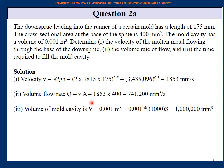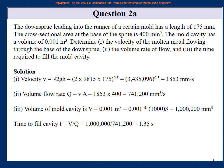The volume flow rate Q equals velocity times cross-sectional area (m/s × m² = m³/s). But the basic definition of volume flow rate is volume per unit time: Q = V/t. Therefore, time equals volume divided by flow rate Q.